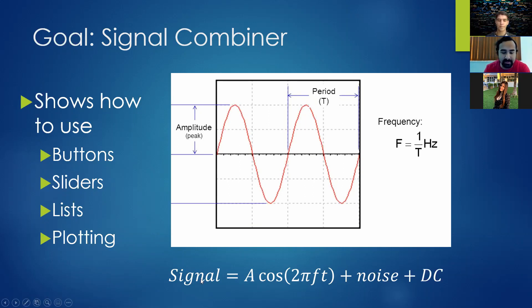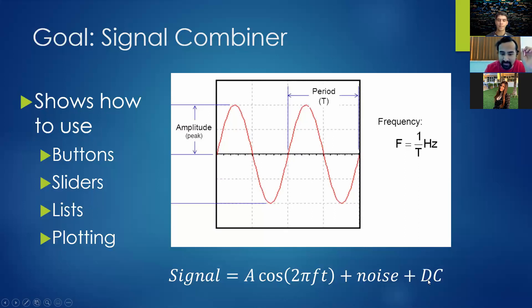The standard equation for a signal is A·cos(2πft) plus some noise plus some DC offset. You have your amplitude from the centerline to the peak, your period when the signal repeats, and frequency as one over the period. In the formula, A is amplitude, cosine gives the sinusoidal shape, 2π times frequency times time. You can add generic noise and a DC offset. We'll make all these components and combine signals together to see results.